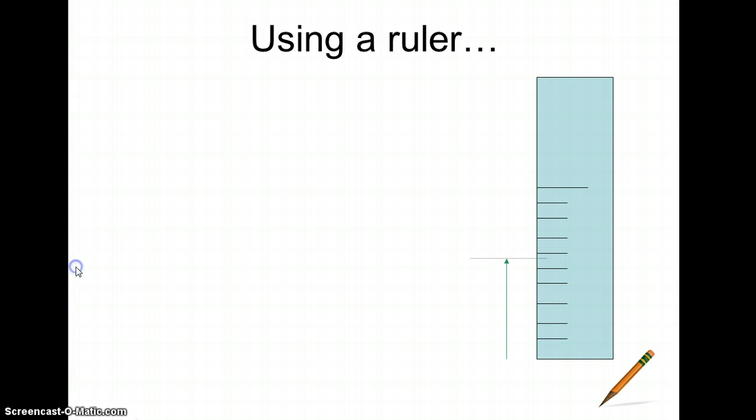For example, when I'm using a ruler, I'm limited to the smallest measurement on that ruler. In this case, each line represents 0.1 centimeters. So if I'm going to measure the length of that green arrow, I need to estimate one space beyond the 0.1 centimeter to show that, in fact, my green arrow extends past one line, but doesn't quite reach the next.